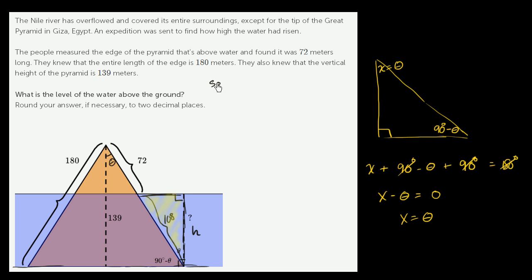We just write SOH-CAH-TOA. Sine is opposite over hypotenuse, that would be this distance over the hypotenuse. Cosine is adjacent over hypotenuse. So we get the cosine of theta is going to be equal to the height that we care about, that's the adjacent side of this right triangle, over the length of the hypotenuse, over 108.